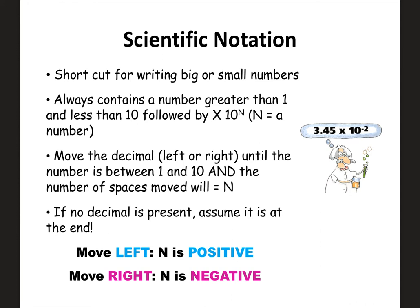You must have one number that's not a zero followed by a decimal point — that's the proper way to write scientific notation. If you have two digits before the decimal point, you didn't do it correctly. All you're doing is moving the decimal point left or right and counting the spaces. If there's no decimal present, assume it's at the end of the number. If you move the decimal to the left, the exponent on the 10 is positive; if you move it to the right, the exponent is negative. We'll look at some examples.